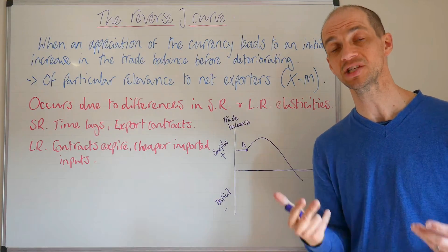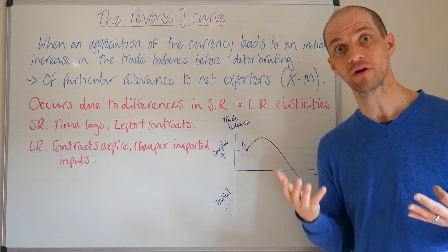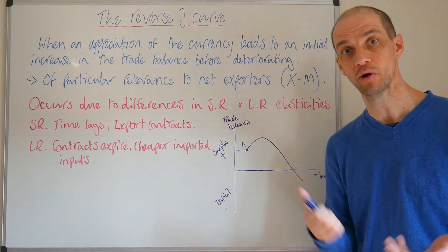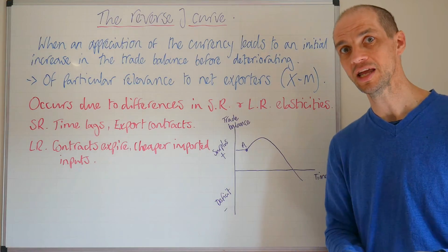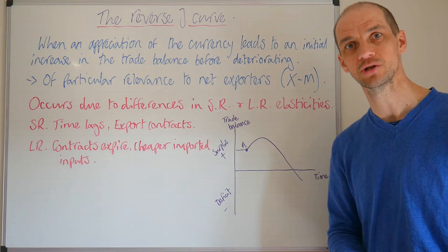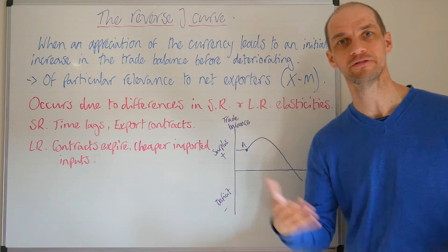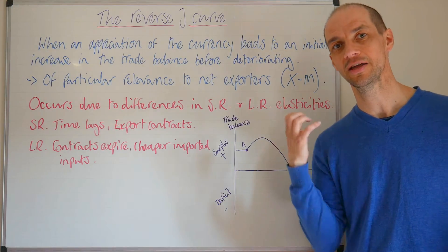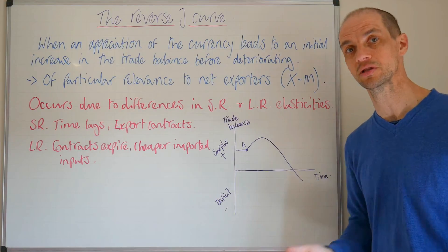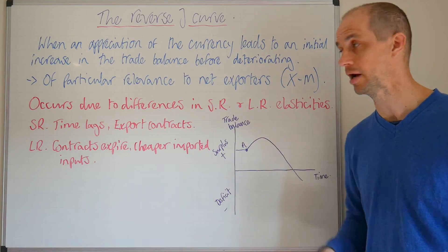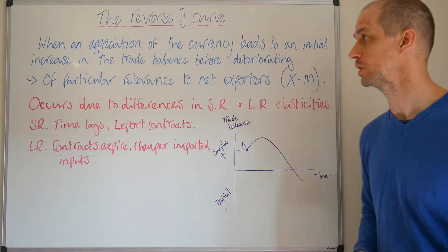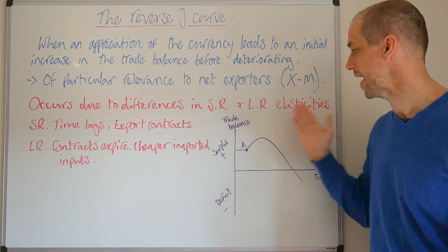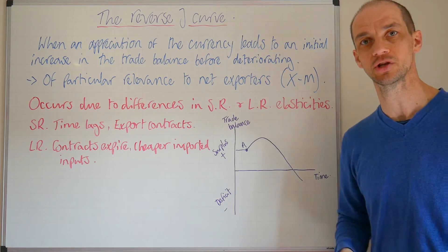Certainly, as domestic consumers then have greater real purchasing power, they would be able to afford more easily foreign manufactured goods — the likes of Mulberry handbags and so on. There would be more imports entering the Chinese economy as a direct result of that increased purchasing power. So this is of particular relevance to those net exporting countries with trade surpluses.